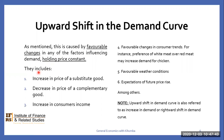The causes would include: one, increase in price of a substitute good; two, decrease in price of a complementary good; three, increase in consumers' income; four, favourable change in consumers' taste — for instance, preference for white meat over red meat may increase the demand for chicken, even though price of chicken has not changed. Other causes would be favourable weather conditions — in hot weather, we are likely to pick a bottle of Coca-Cola as opposed to a cup of hot coffee — and expectations of future price increases, amongst others.